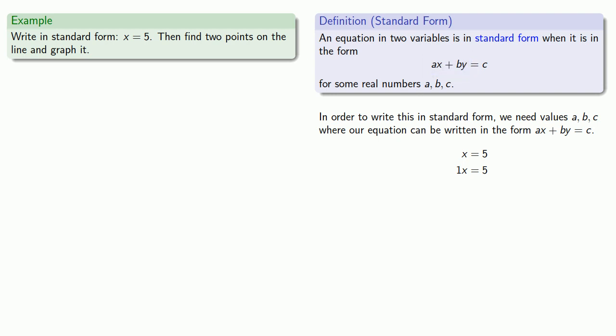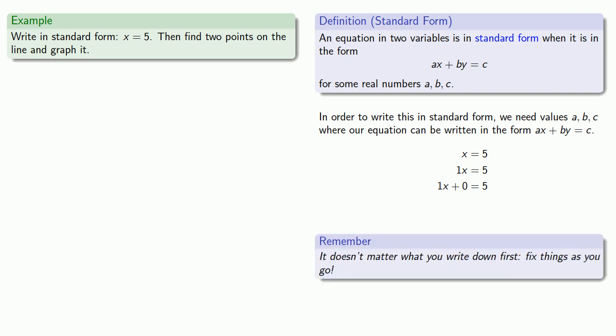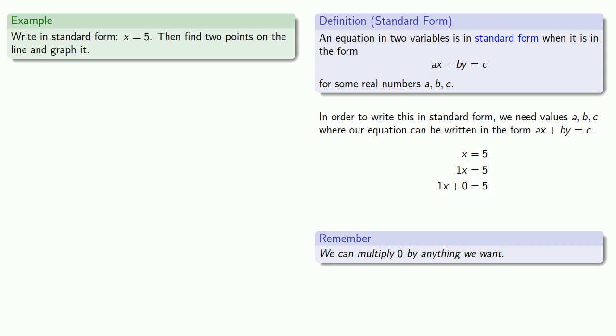Another rule we can remember from algebra is that we can always add 0. So let's add 0. You might say, well, that isn't standard form. There's no y there. And that's true. But remember, it doesn't matter what you write down first. Fix things as you go along. Here, the fix is to remember that we can multiply 0 by anything we want and it doesn't change anything. So I'll multiply 0 by y. And now I have my equation in standard form: 1x plus 0y equals 5.